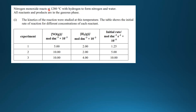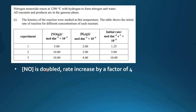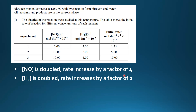In our next example, we're given information about the reaction at 1280°C where all reactants and products are in the gaseous phase. We have experiments 1, 2, and 3 with the concentration of nitrogen monoxide, the concentration of hydrogen gas, and the initial rate. For nitrogen monoxide, we double the concentration while hydrogen stays the same, and the initial rate increases by a factor of four. For hydrogen, in experiments 2 and 3, we double the concentration of hydrogen while nitrogen monoxide stays the same, and the rate increases by a factor of two.